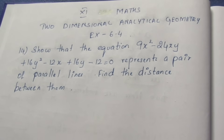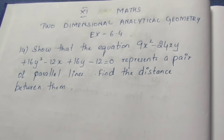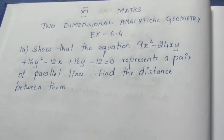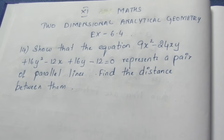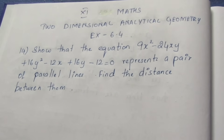Show that the equation 9x² - 24xy + 16y² - 12x + 16y - 12 = 0 represents a pair of parallel lines. If it represents parallel lines, find the distance between them.